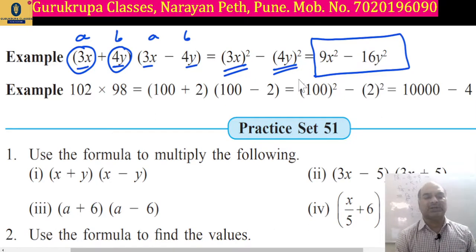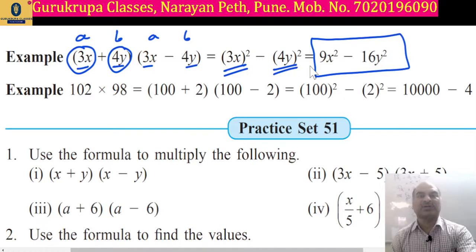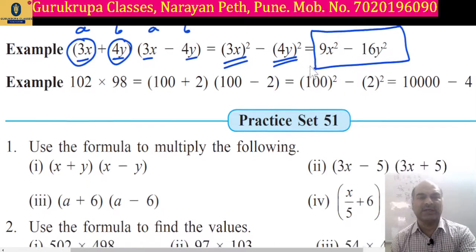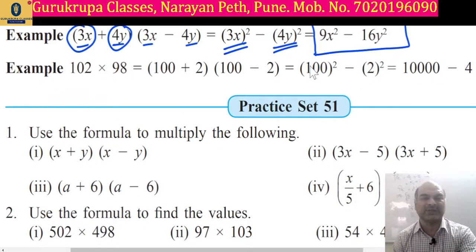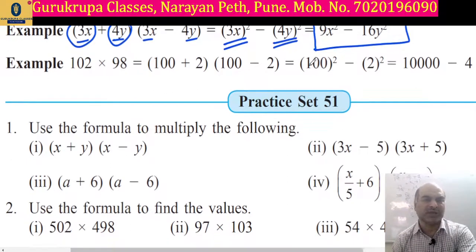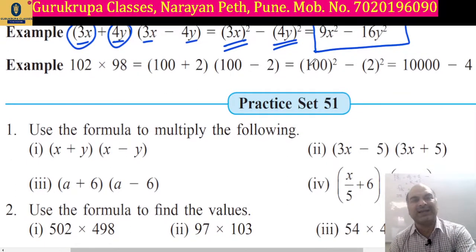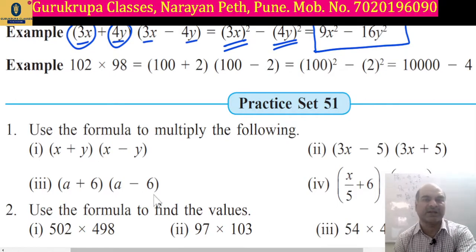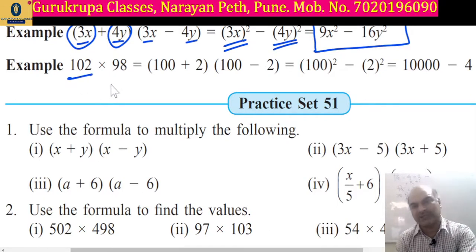I hope that you could understand this properly. Do not make any mistake — it is a very simple formula. Now we can use this to find the product of two numbers. How? The first number we have is 102 and the second number is 98.